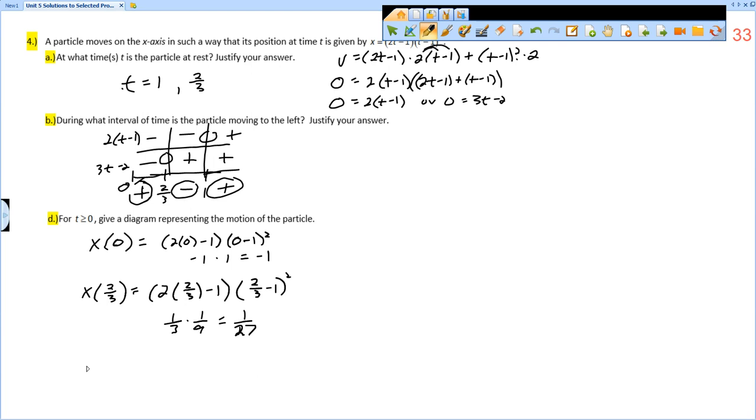Then it's going to move to the left, and it's going to go as far left as whatever x of 1 is, then turn around and go back to the right. So now I plug 1 in: 2 times 1 minus 1 times 1 minus 1 squared. 2 times 1 minus 1, that's 1, times 0. So it goes back to 0. It starts at negative 1, goes to the right to 1/27, back to the left to 0, and then it goes back to the right forever.